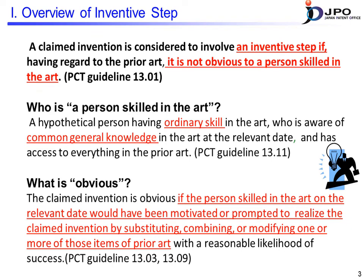The next keyword is obviousness. The PCT guidelines consider an invention to be obvious if a person skilled in the art is motivated or facilitated in producing the claimed invention by substituting, combining, or modifying the prior art. I will give a further explanation of the word 'obviousness' later.